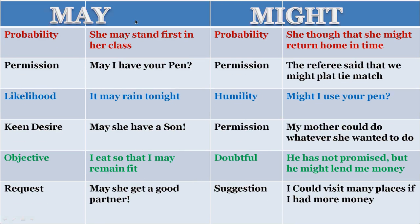The other form is may and might. If you are talking about probability: 'She may stand first in her class.' That's the possibility. For past probability: 'She thought that she might return home in time.' There is more emphasis on this. For permission: 'May I have your pen?' And: 'The referee said that we might play a tie match.'